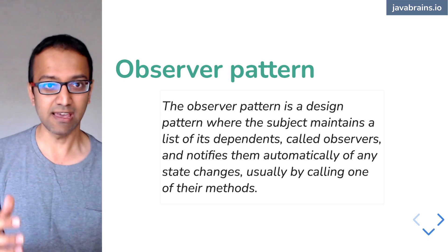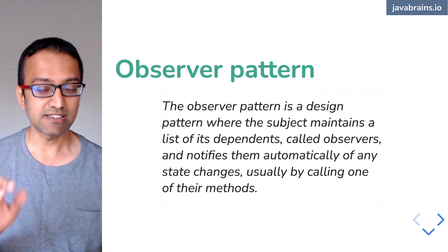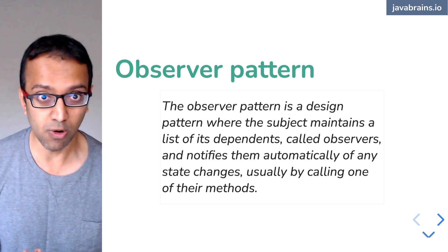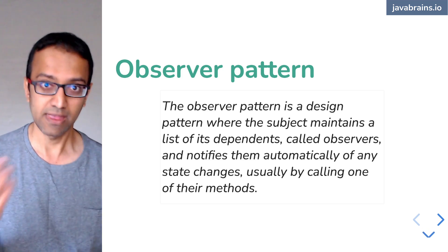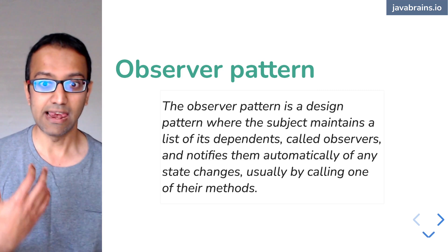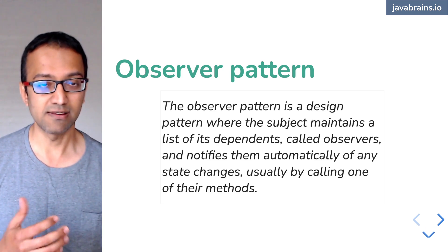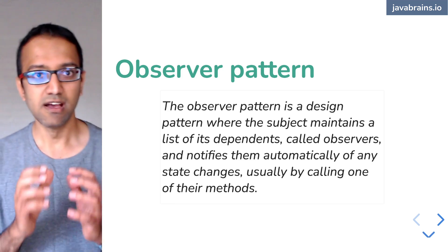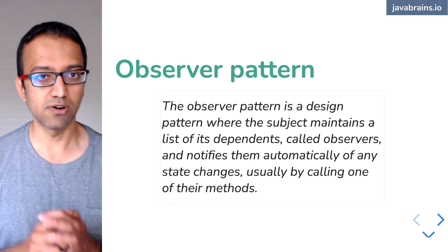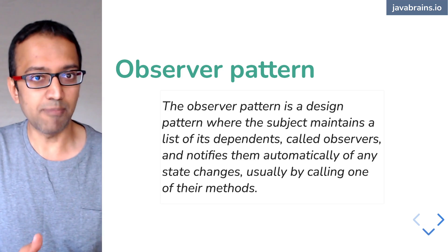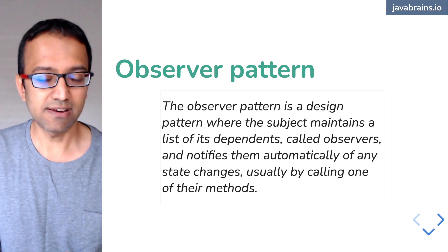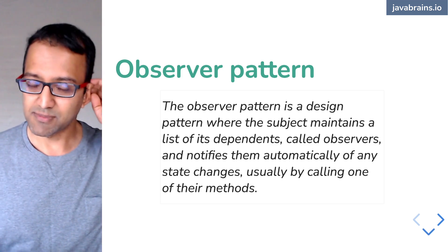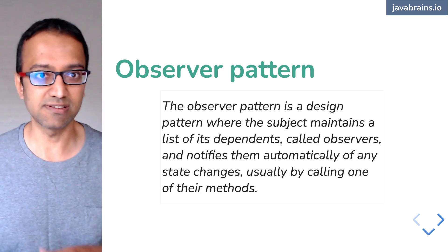The observer pattern is a design pattern where the subject maintains a list of its dependents called observers, and it notifies them automatically of any state changes, usually by calling one of their methods. Basically this thing is saying, I can publish something at any point in time. Something can happen to me. Whoever wants to know, whoever wants to subscribe, let me know. So they listen, and then when something happens, it sends out. For example, a button click. A consumer can say, hey, when the button click happens, I'm going to give you a method, execute that method. This was pre-Lambdas at the time. Of course, with Lambdas, it becomes a little simpler.